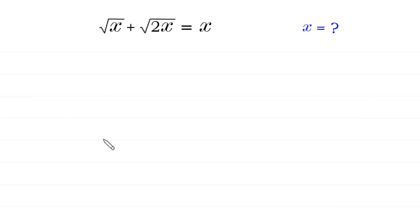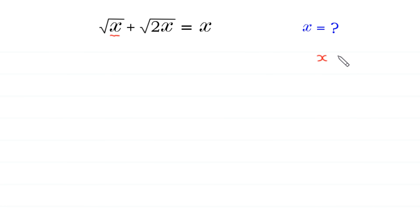Hello, welcome to how to solve this very nice radical equation. Square root of x plus square root of 2x is equal to x, and we need to find all possible values of x. Since x is under a radical sign, x must be greater than or equal to 0. We use this condition to verify the solutions of this equation.